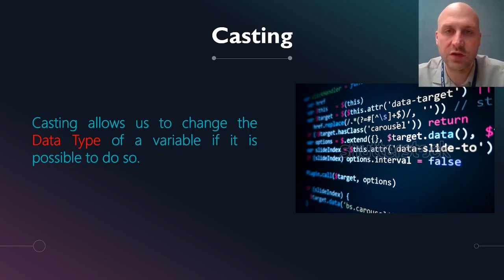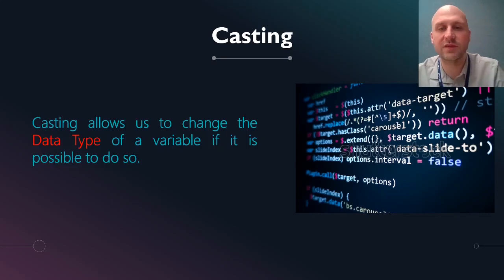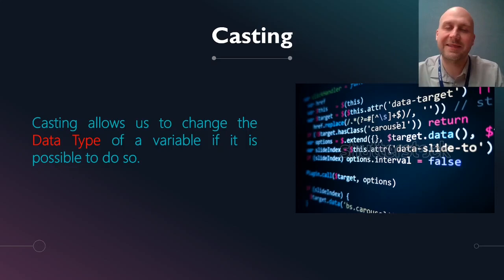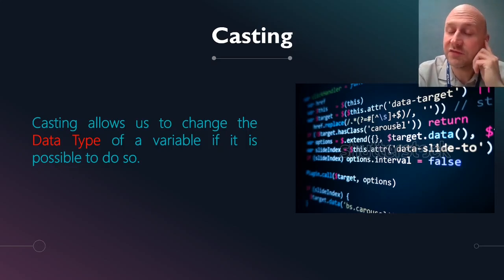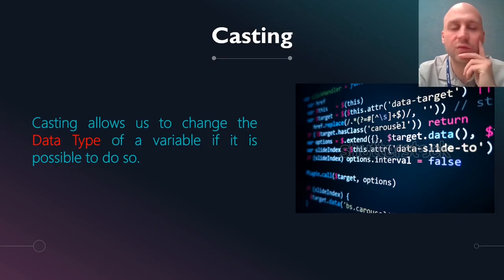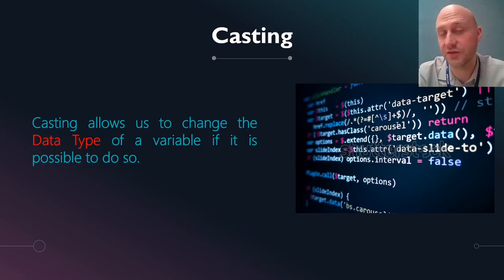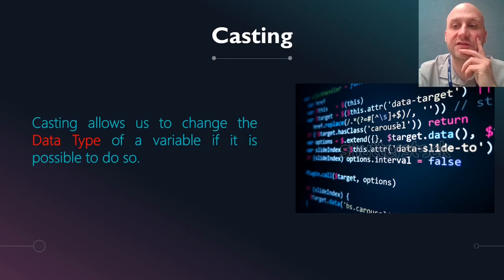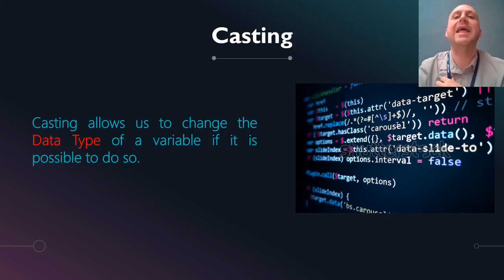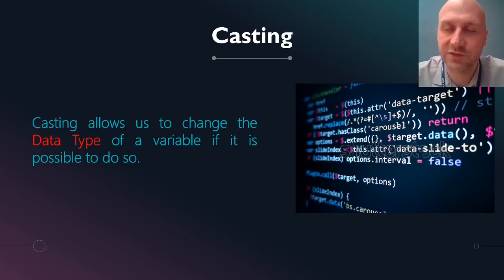Now it is possible to move from one data type to another. So if we want an integer to now be a float — this is really important — if you try and divide two integers together, like say five and two, you will not get 2.5. Because you have two integers, you will get two. It will round it down to two. So what you would do is turn them both into floats, or real numbers, and then do the division, and you will get 2.5 as an answer.